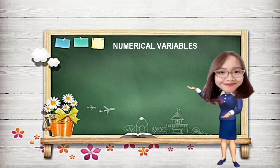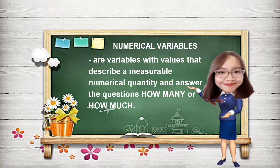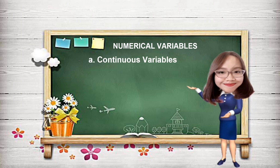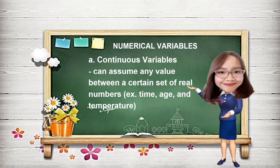Let us start with numerical variables. These are variables with values that describe a measurable numerical quantity and answer the questions 'how many' or 'how much.' These values are considered as quantitative data. An example of numerical variables are continuous variables — these variables can assume any value between a certain set of real numbers. The values depend on the scale used, and continuous variables are also called interval variables. Some examples are time, age, temperature, height, and weight.